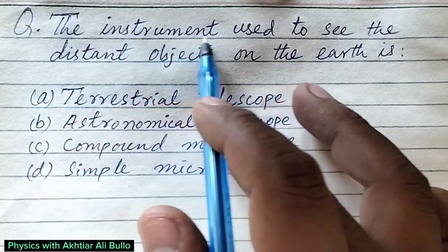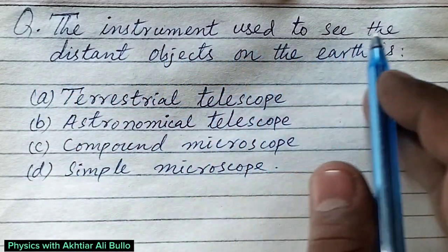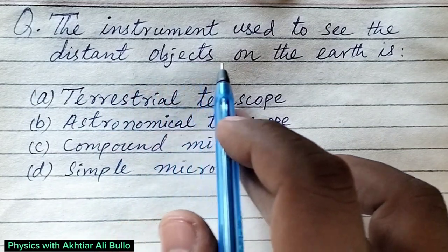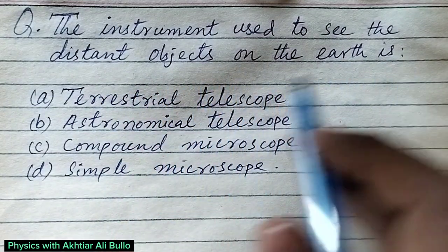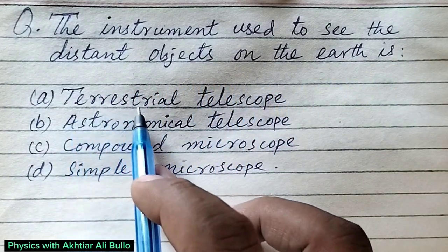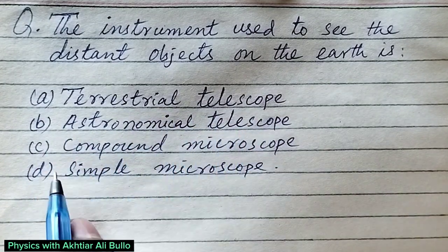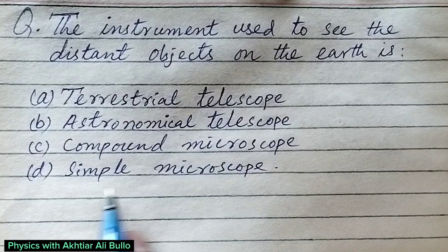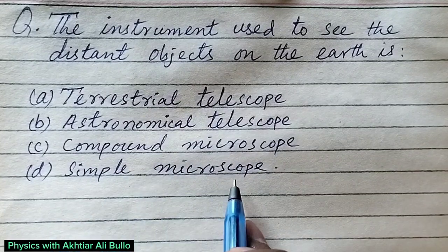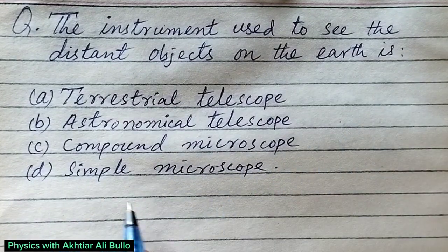The question is, the instrument used to see the distant objects on the Earth is: A. Terrestrial Telescope, B. Astronomical Telescope, C. Compound Microscope, D. Simple Microscope.